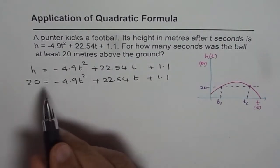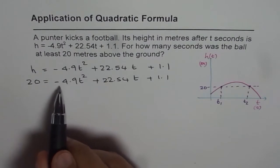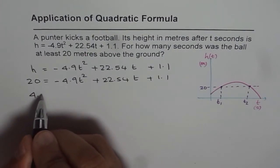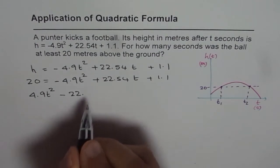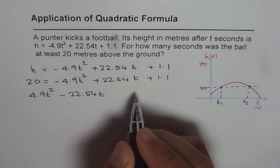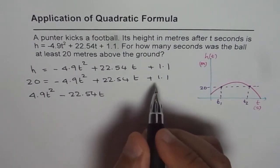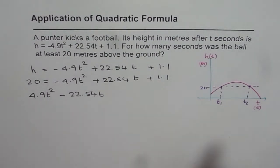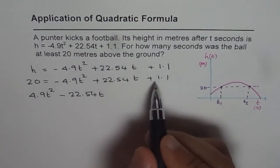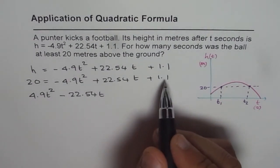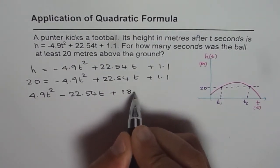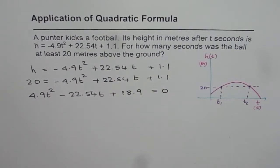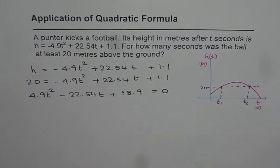Let us bring all the terms together to one side. It is always good to have the leading coefficient positive. So I will bring everything to the left side. So we will write this as 4.9 t² minus 22.54 t minus, so when I do 20 minus 1.1, we get 20 minus 1 is 19 and 0.1 take away will give us 18.9. So we will say 18.9 equals 0. So that is what we get as our equation.